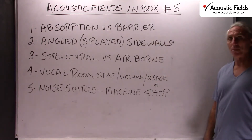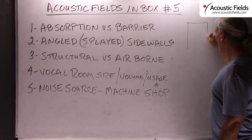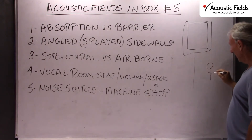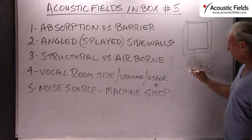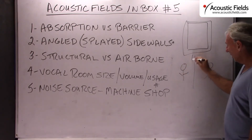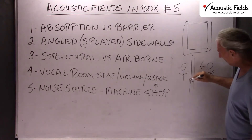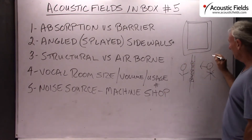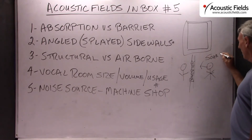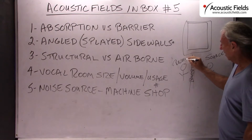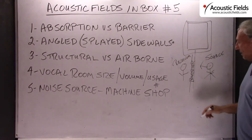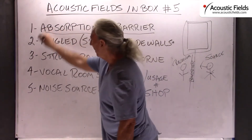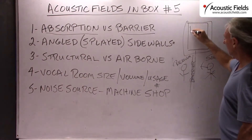There's a lot of confusion between absorption and barrier technology. A barrier is just that — a boundary surface between a noise source and a receiver. If you have a noise source on the outside of your room, the quickest way to stop that noise from getting in is to construct a barrier between the source and the receiver. Then you use sound absorption technology on the inside of the room.